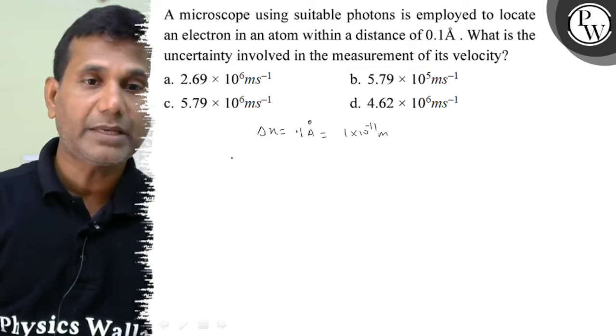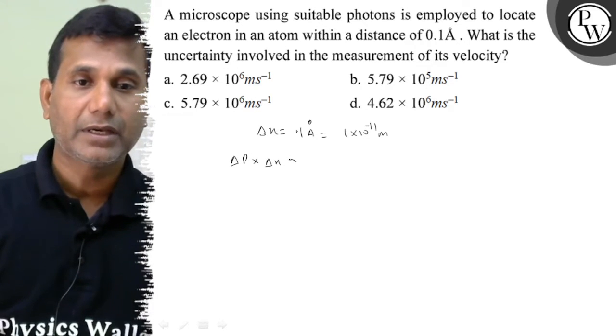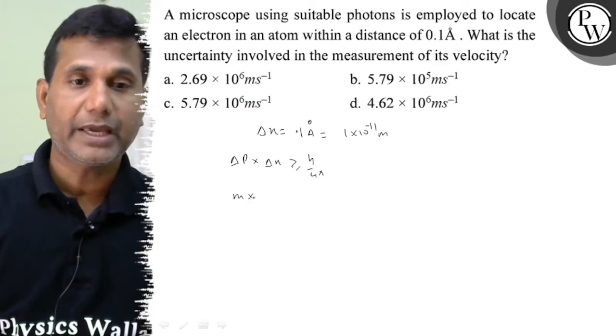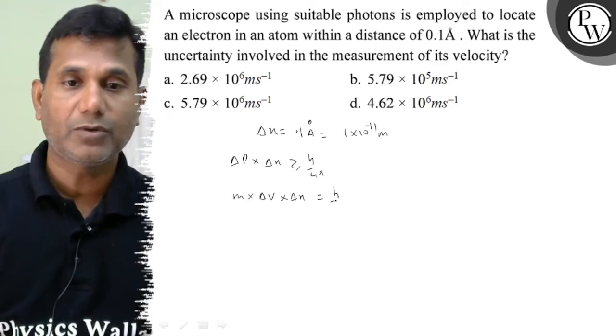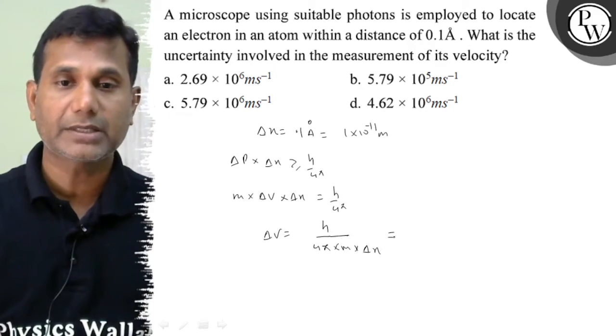According to Heisenberg uncertainty principle, delta p into delta x is greater than or equal to h upon 4pi. Delta p can be written as m into delta v into delta x equals h upon 4pi. We calculate delta v as h upon 4pi into m into delta x.